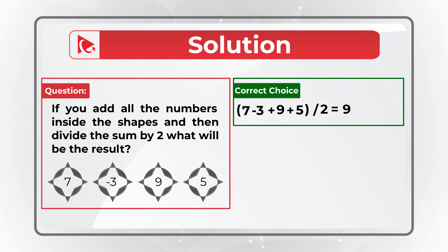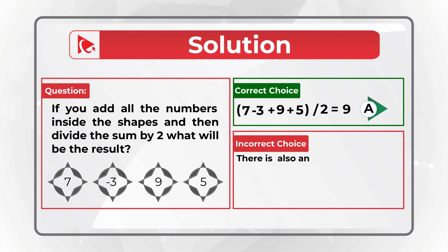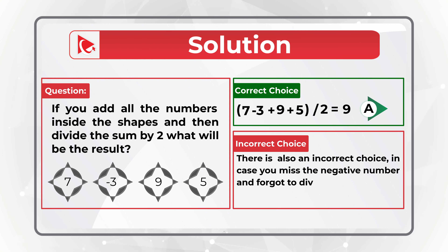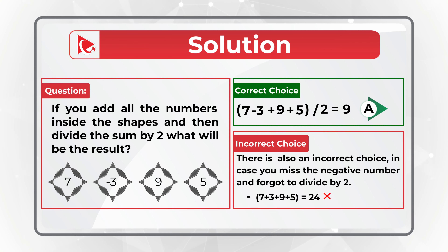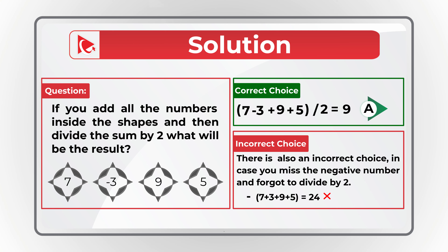What's interesting about this question is that there are many ways to get to an incorrect answer. For example, if you forget to divide by 2, there is an answer for that. If you don't see the negative number and forget to divide by 2, there is a choice for that as well. And if you just forget the negative number, there's a choice for that too — which means you have to read the instructions carefully.